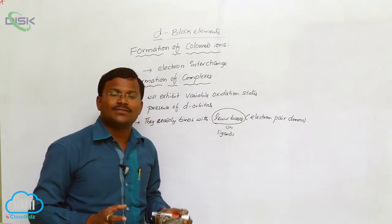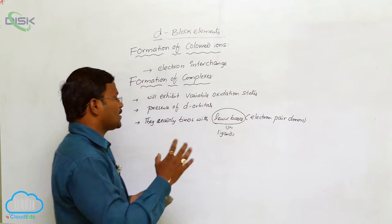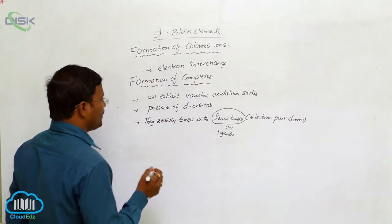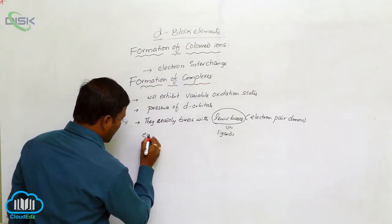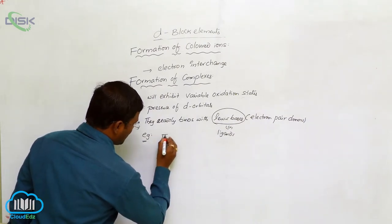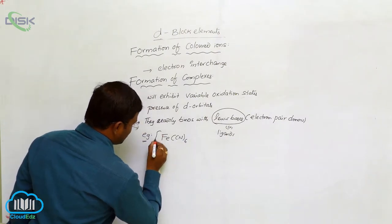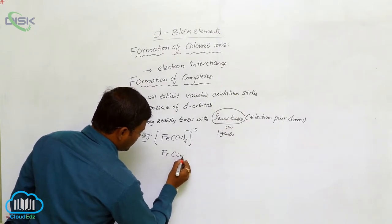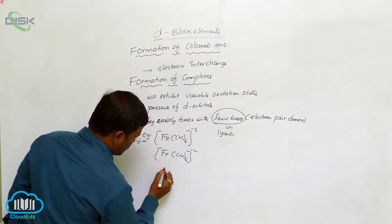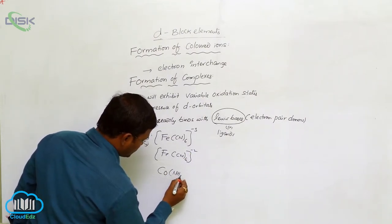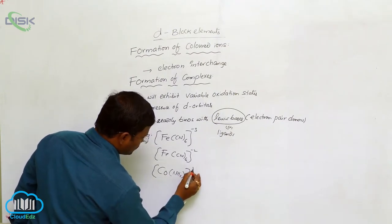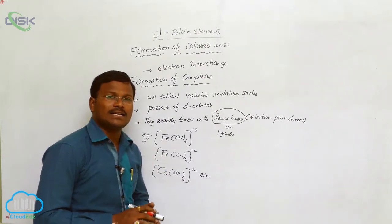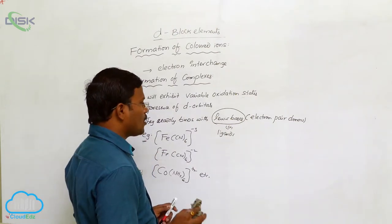The chemical species that donate electron pairs are called ligands. These ligands donate their electrons toward the empty d-orbitals of metals to form metal complexes. Examples of metal complexes include [Fe(CN)₆]³⁻, [Fe(CN)₆]²⁻, and [Co(NH₃)₆]²⁺.